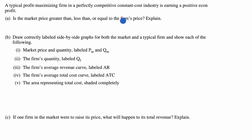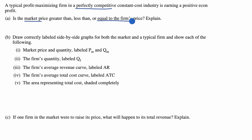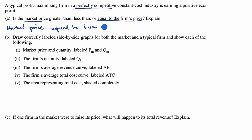Now let's do it together. We are talking about a perfectly competitive market. In a perfectly competitive market, all of the players in that market have to be price takers — they have no pricing power. So the market price has to be equal to the firm's price. Market price equals firm price.